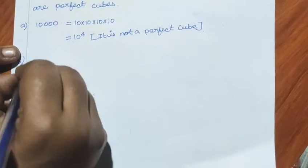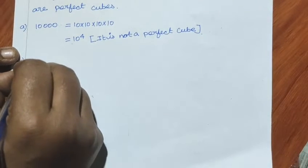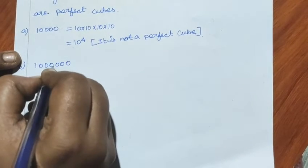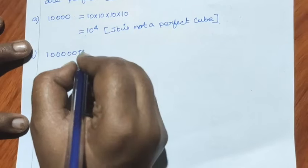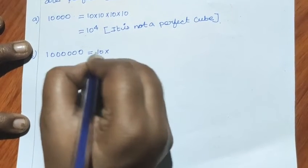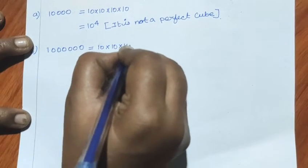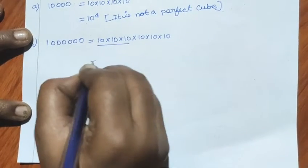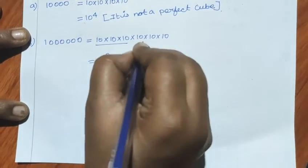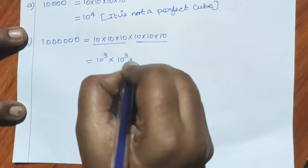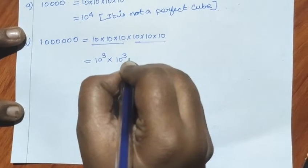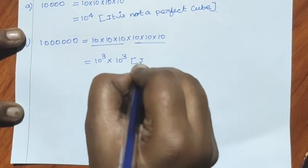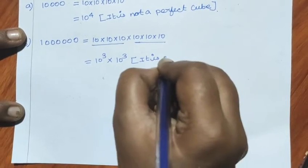B sum: 10,000,000 — that is 10 to the power 7, which equals 10 cube into 10 cube — wait, let's check. 10,000,000 — is it a cube? Yes, it is a perfect cube: 10 cube into 10 cube.